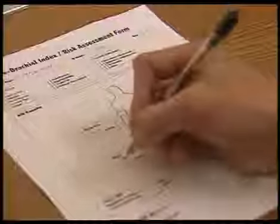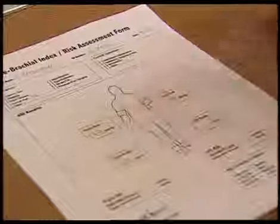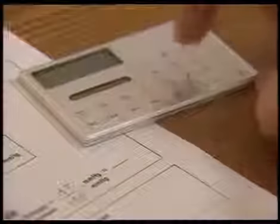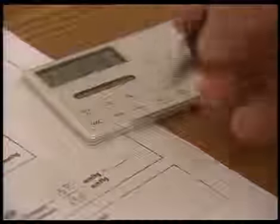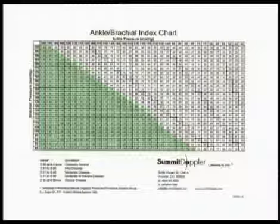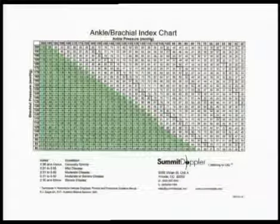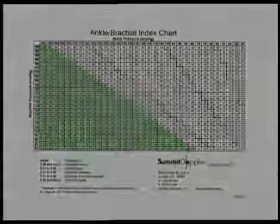The ABI is now calculated for each leg. Using a calculator, divide the ankle pressure by the higher of the two arm pressures. Instead of a calculator, you can also use an ABI chart to determine the ABI.